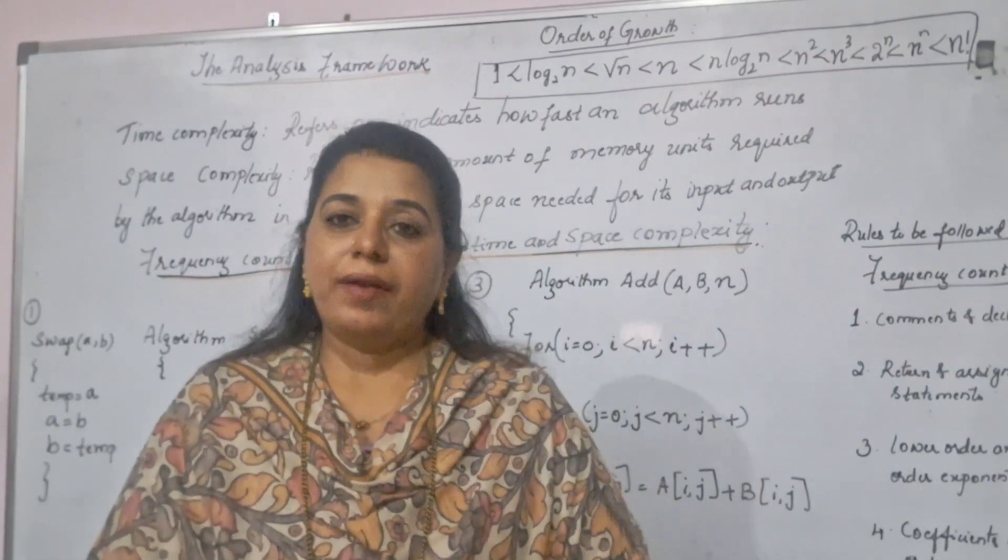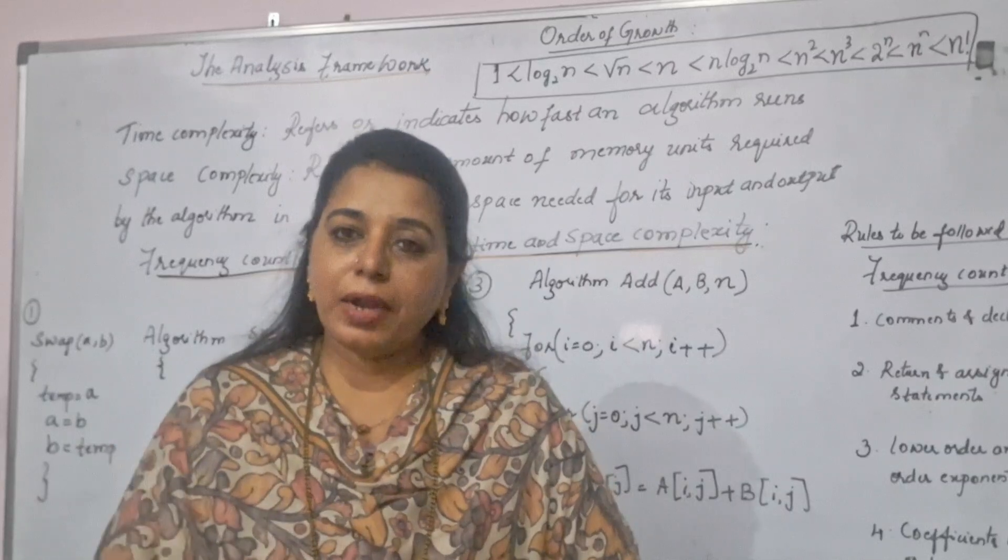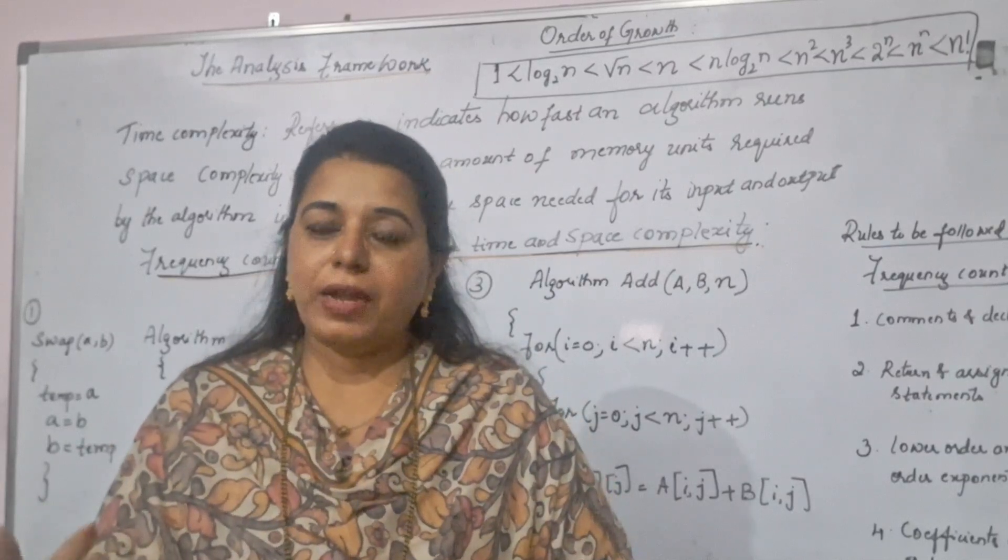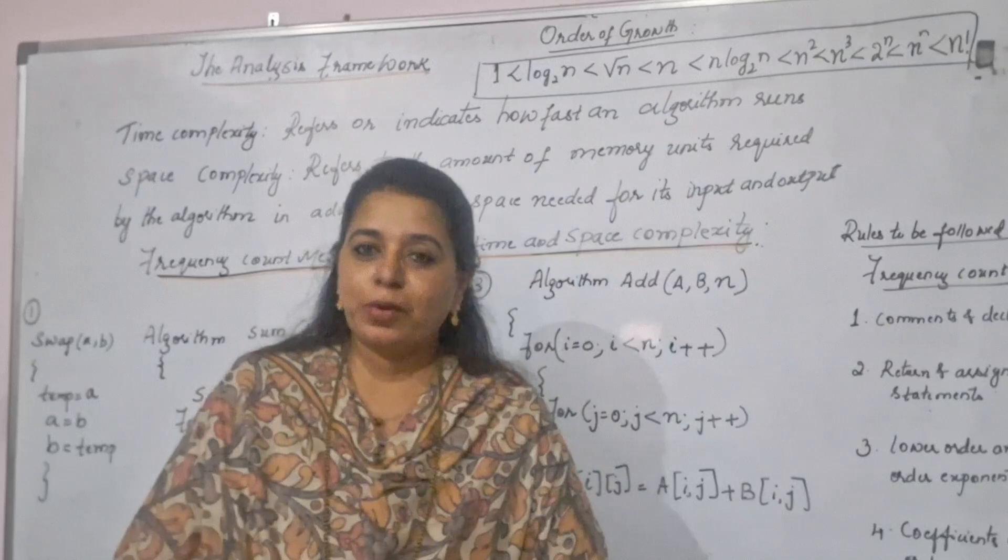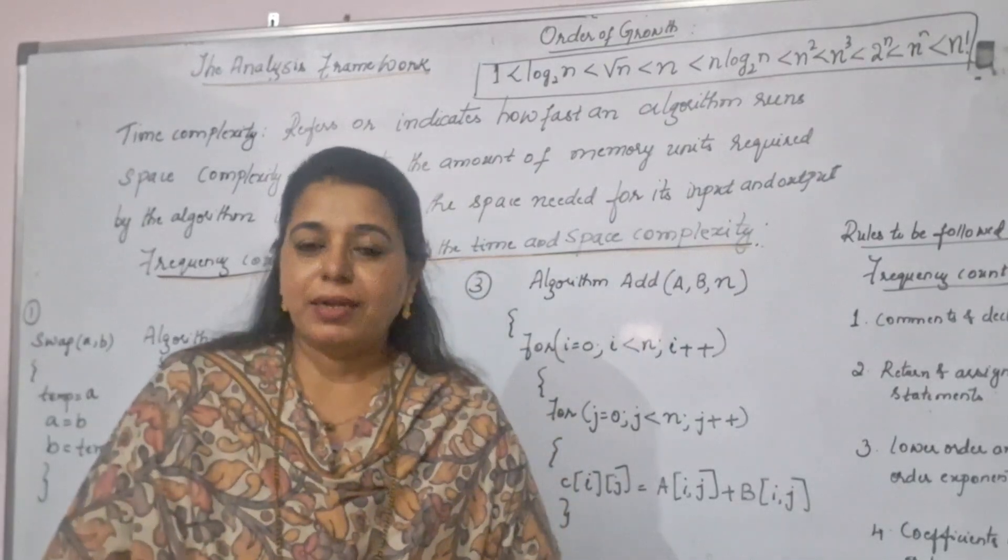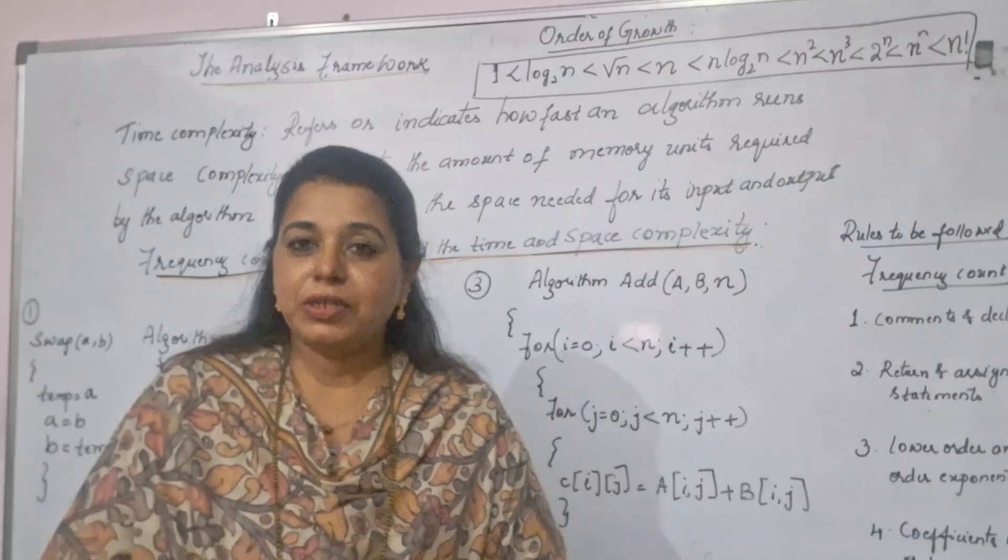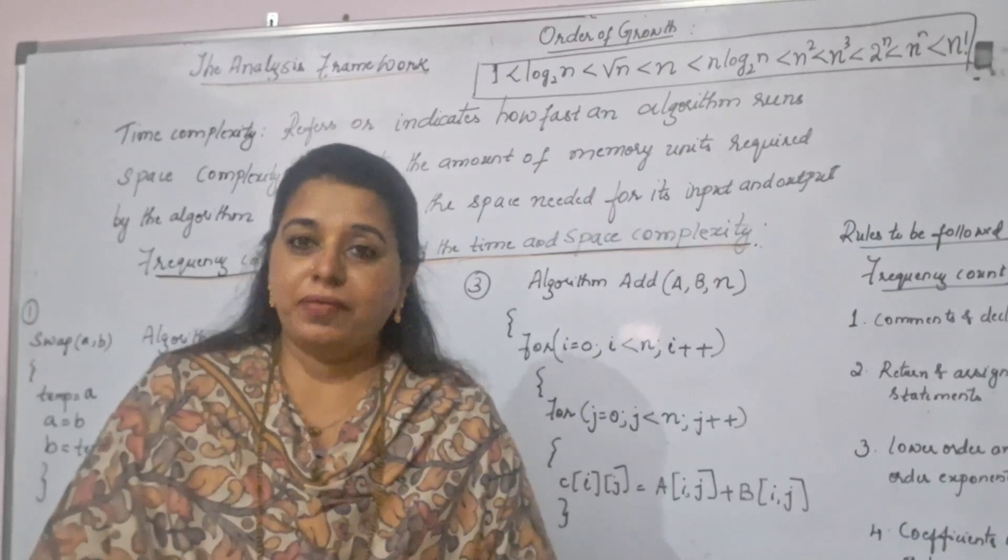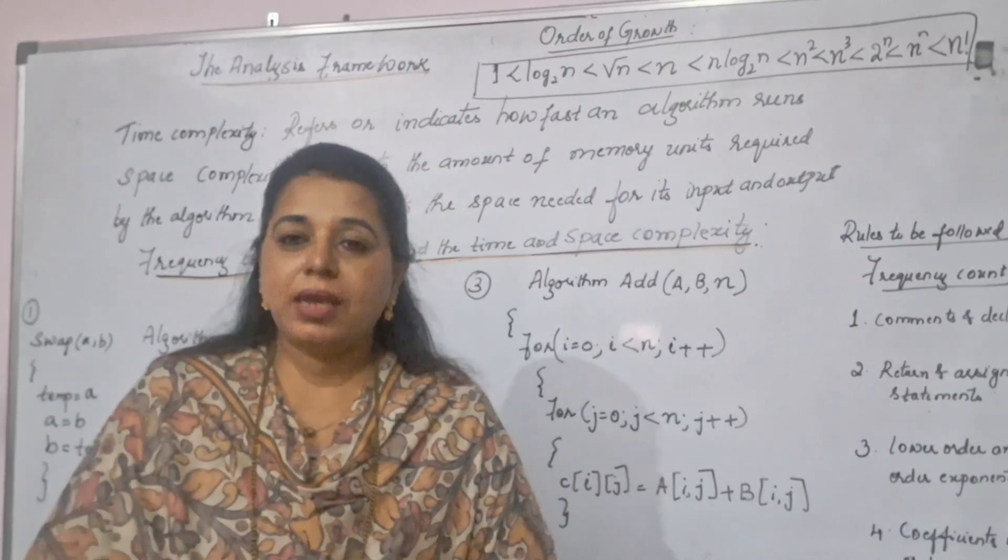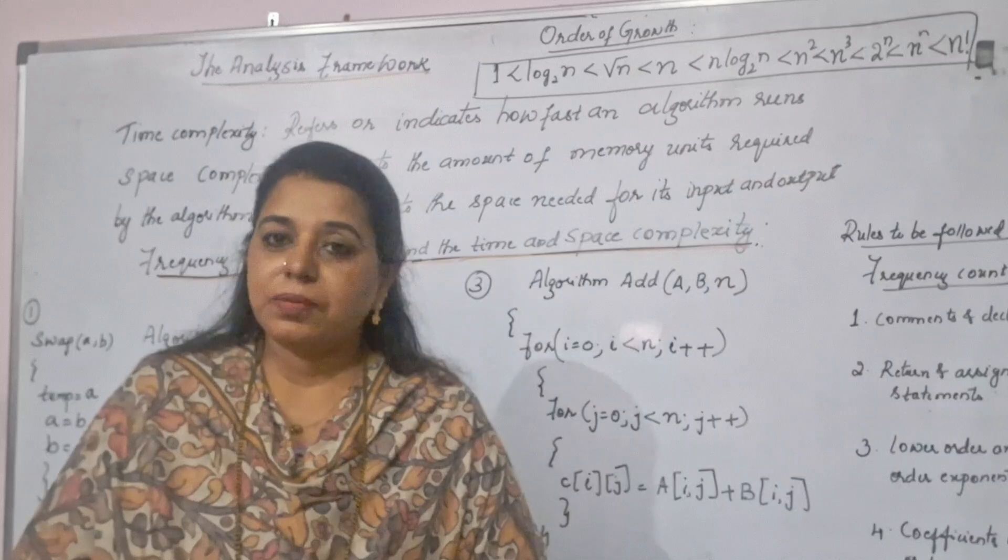But after execution it is found that your algorithm is taking less amount of time in completing its job, and my algorithm is taking more time in execution. So what can be the reason? Immediately we assume yes, maybe my algorithm is not efficient or I am not using an efficient logic here. So that's why it's taking more time and your algorithm is more efficient.